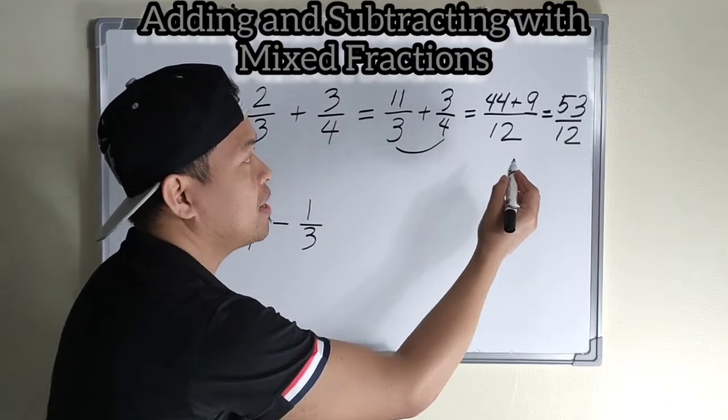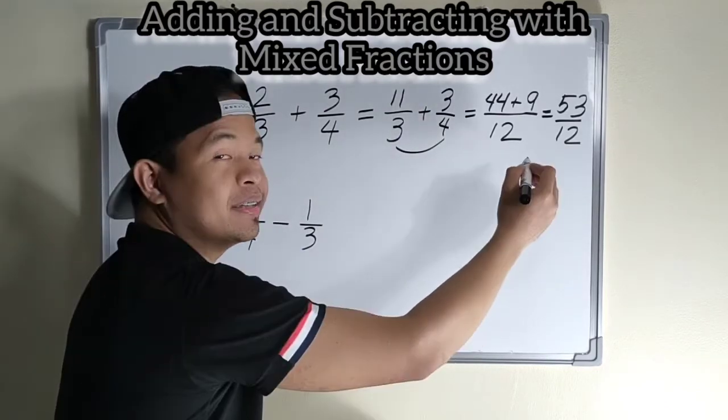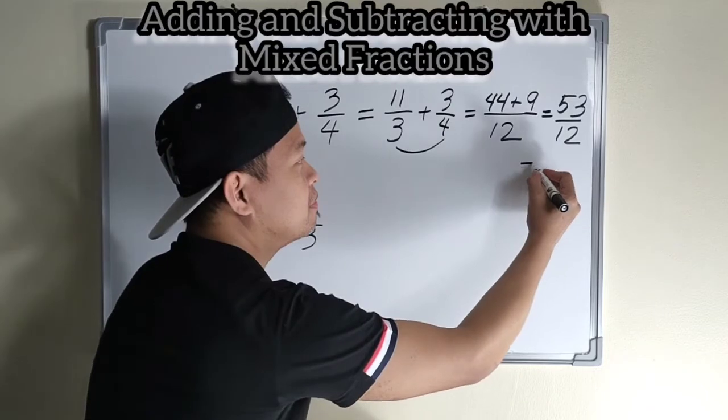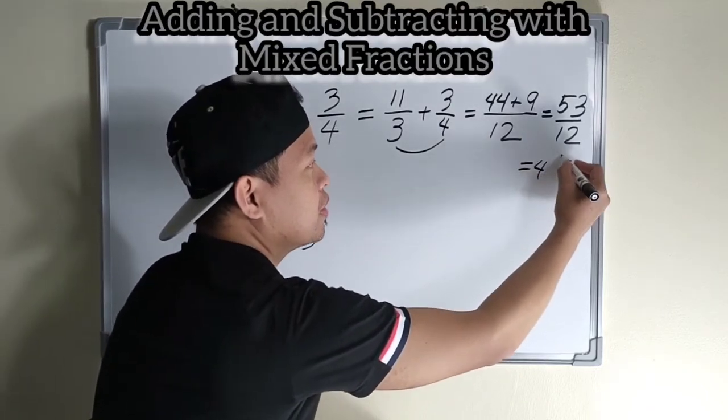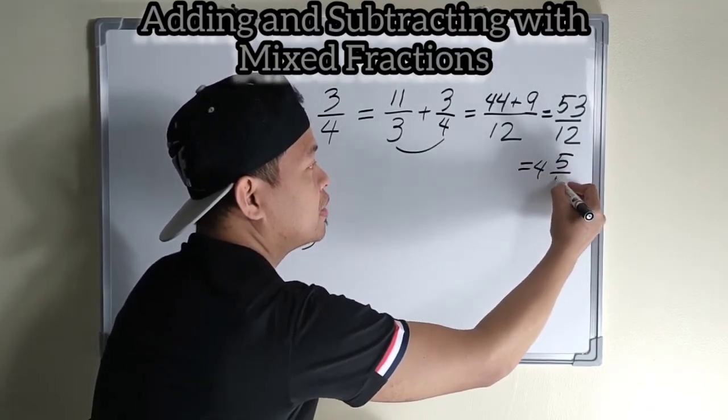Fifty-three over twelve is four and five over twelve.